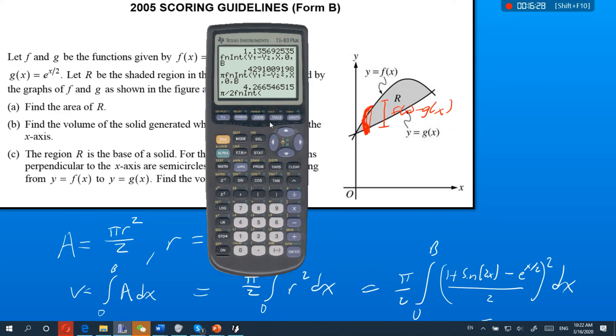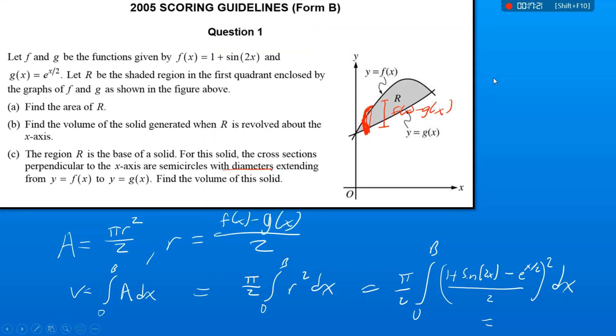So that gives us pi over 2 times math 9. I'm going to do f of x minus g of x over 2 squared. This is variables y variables function y1 is f of x minus variables y variables function y2 is g of x. And then I need to divide all of that by 2. I actually need one more parenthesis here I think. So I can insert an extra parenthesis. So I'm going to close the first parenthesis, divide by 2, close that and then square it. Okay, I'm doing that in terms of x from a which is 0 to b. Okay, which gives us 0.078 for our volume.